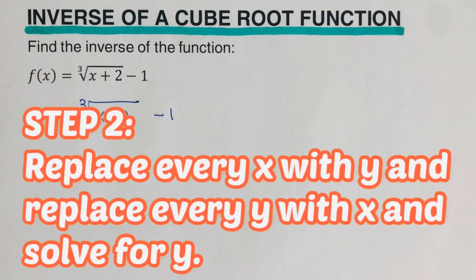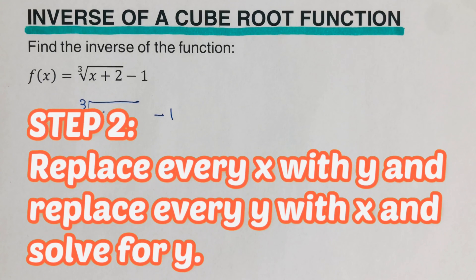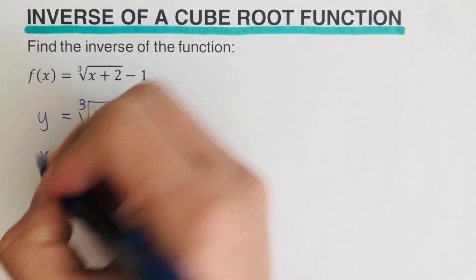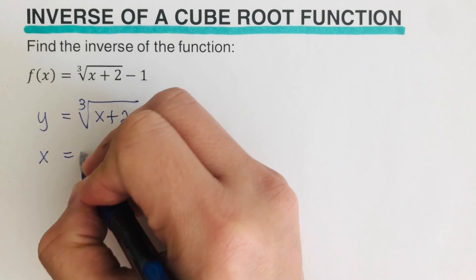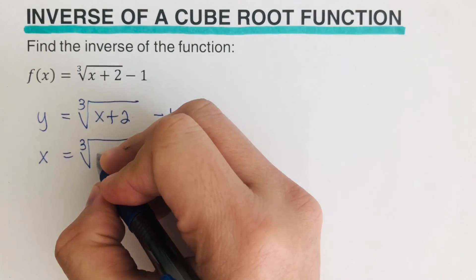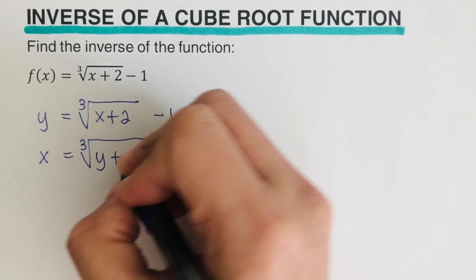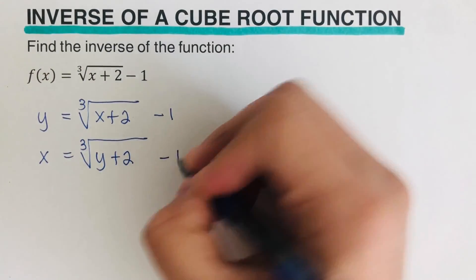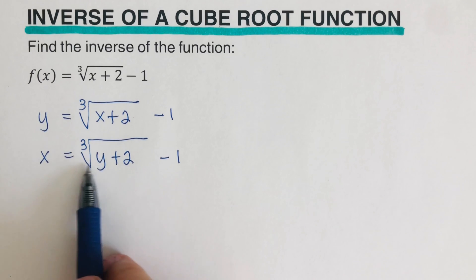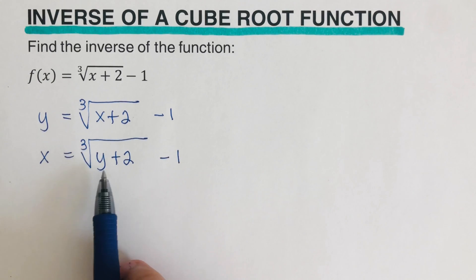The second step is to replace every x with y and replace every y with x, and solve for y. So the y will become an x, and that is equal to the cube root of — the x will become a y — y plus 2, minus 1. Part of this step is to solve for y by itself, so y is mixed up with all of these and we want y by itself.